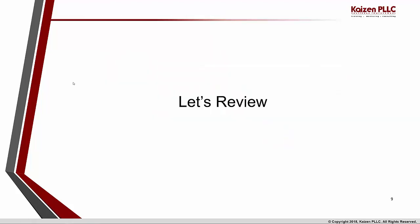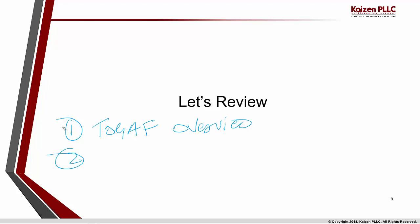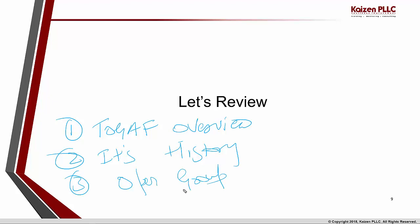Let us review what we have covered so far in today's topic. We looked at several key elements: first and foremost, the TOGAF overview; secondly, its brief history; then we looked at the Open Group as an organization — whom it is made up of, how they work, and how your organization as a member can participate with the Open Group. And finally, we defined some key aspects of enterprise, architecture, and framework.